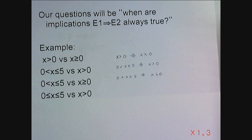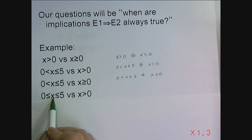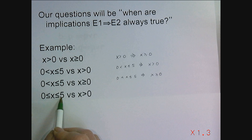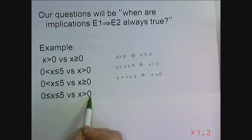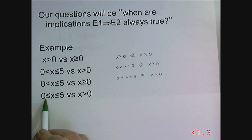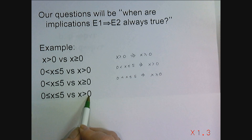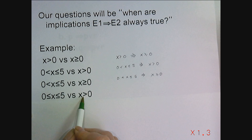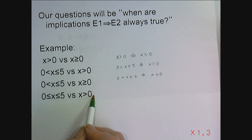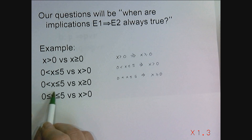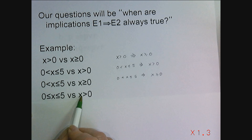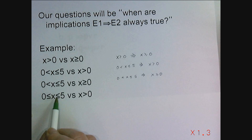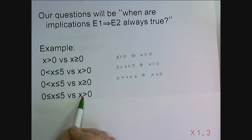Now let's look at this one: x between zero and five, including zero and five, versus x being greater than zero. If I pick zero, it makes the first true but not the second. So the first is not stronger than x being greater than zero. On the other hand, if I pick seven, it makes x greater than zero true but not the first. So these two expressions — neither one of them is stronger or weaker than the other.